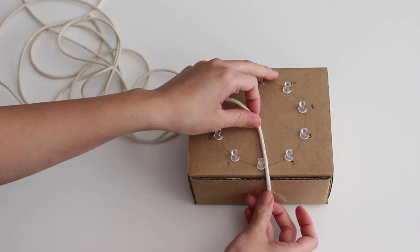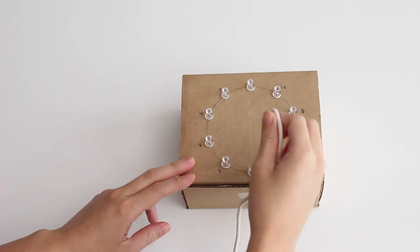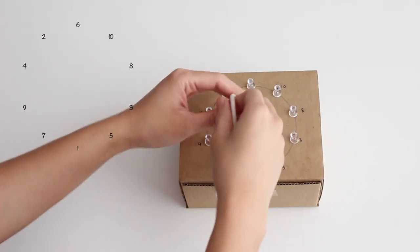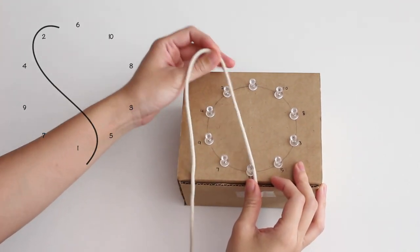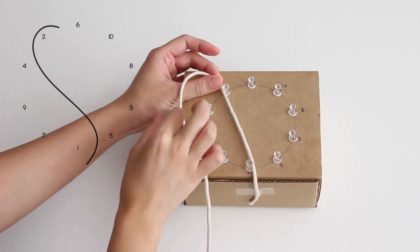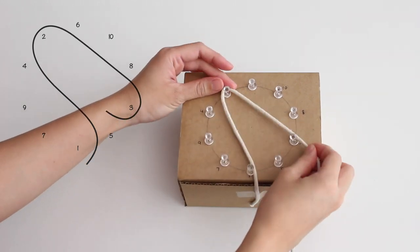Tape the other end of the cord to the box by the number 1. Bring the cord to the number 2. Wrap it around the thumbtack and go to number 3.